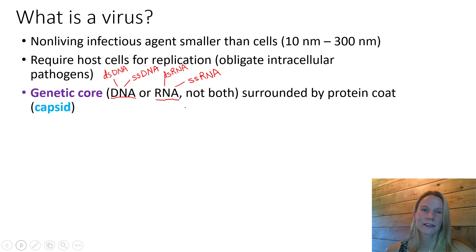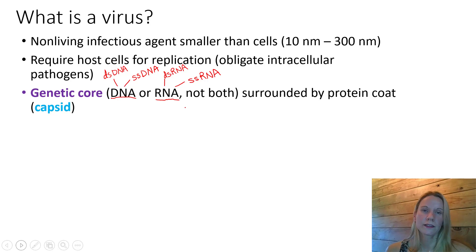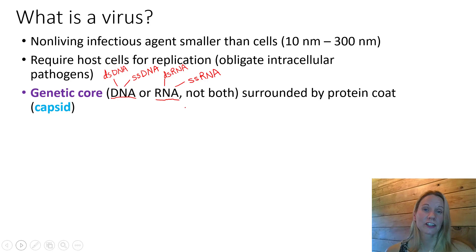So you can already see that there are some key differences in genetic structure between viral genetic cores and the nuclear DNA of cells. This genetic core - one of these four varieties, although it gets a little more complex with the single-stranded RNA viruses because there are actually two different types of single-stranded RNA virus - but more on that when we cover the RNA viruses in the lecture video.